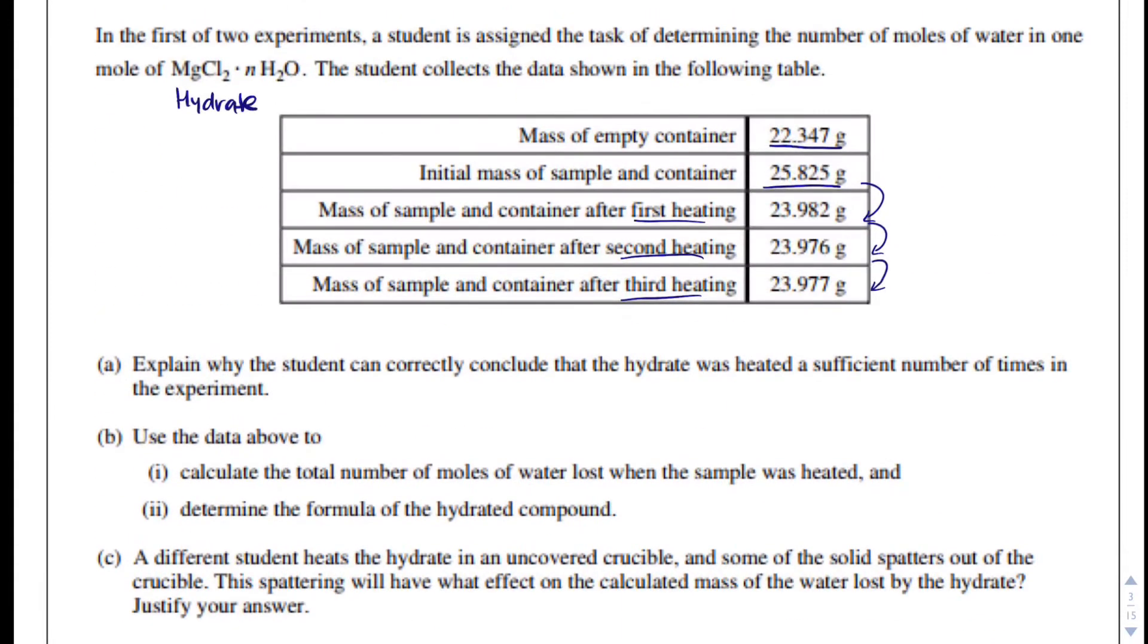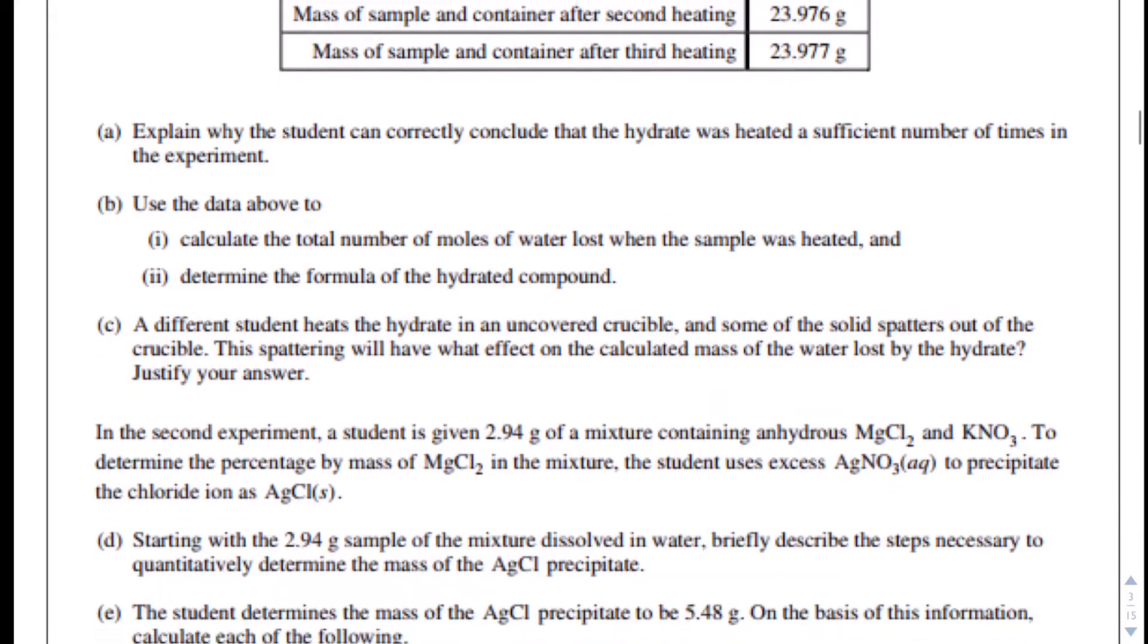What I would say here is that, essentially, no water was evaporated between the second and third heating, thus indicating all the water is out. Now, I understand that between the second and third heating, it does change by one thousandth. This actually goes up a little bit, but for all intents and purposes, no more water is being lost. There is some level of error that occurs in a lab, no matter what.